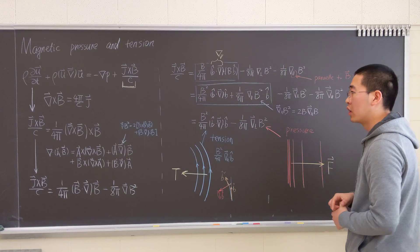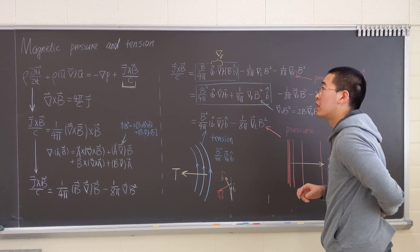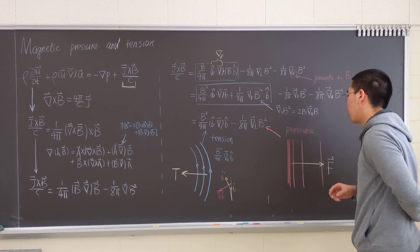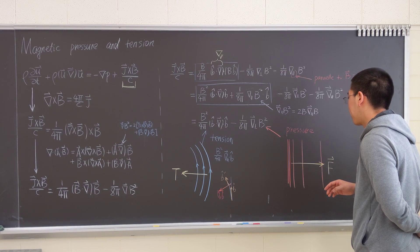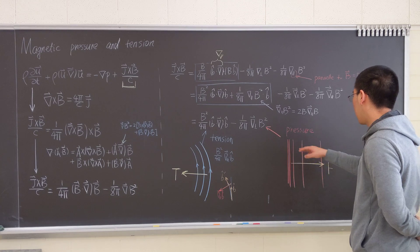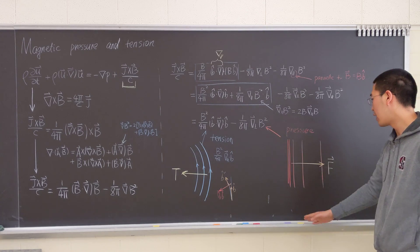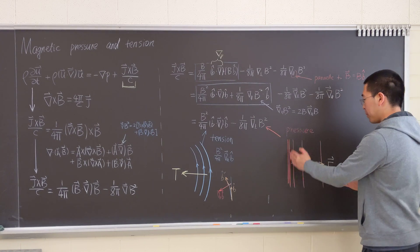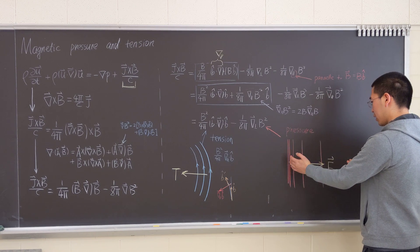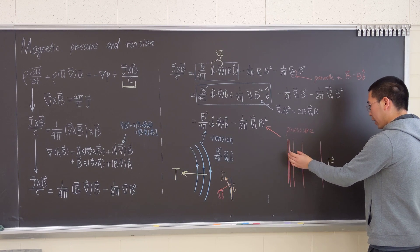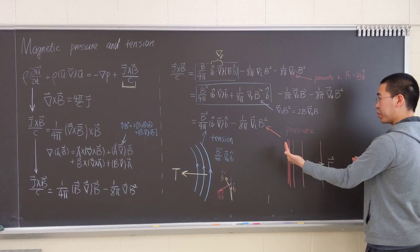So it will be like this. So if we have some curvature like that, the tension will move inward. And this can be related to the good curvature and bad curvature in Tokamak. And then the pressure, the higher the magnetic field, the stronger the higher gradient magnetic field will push it up.